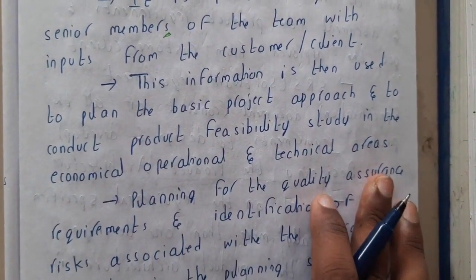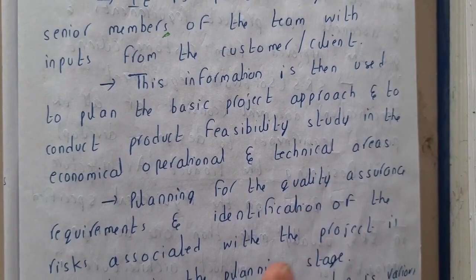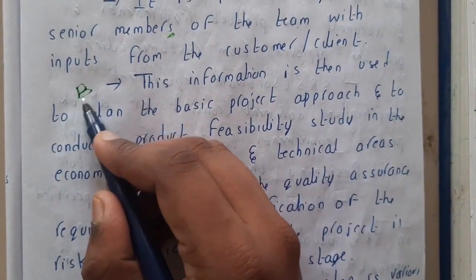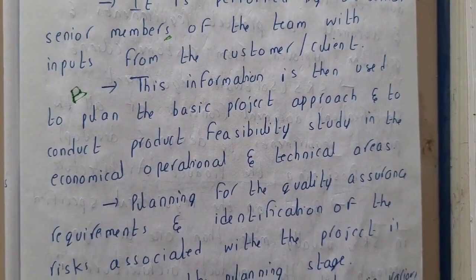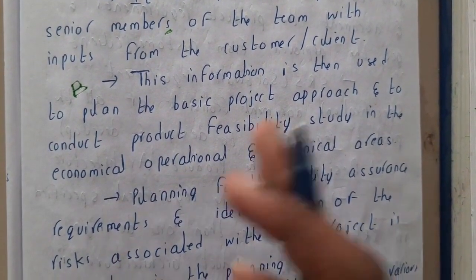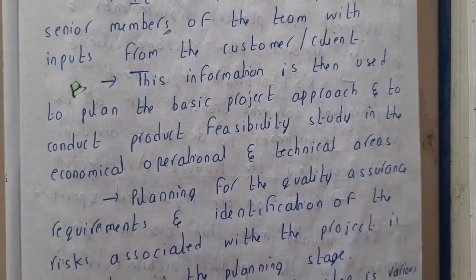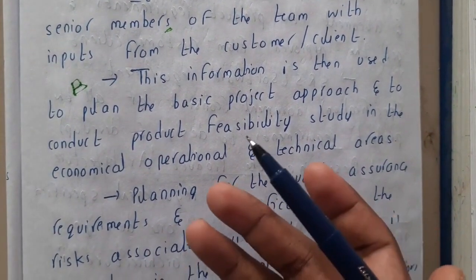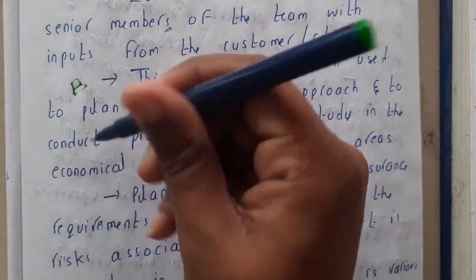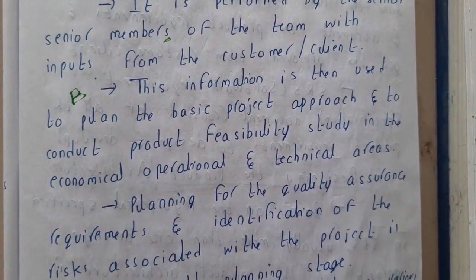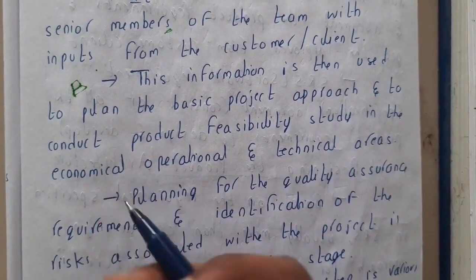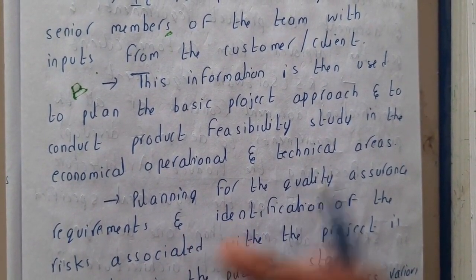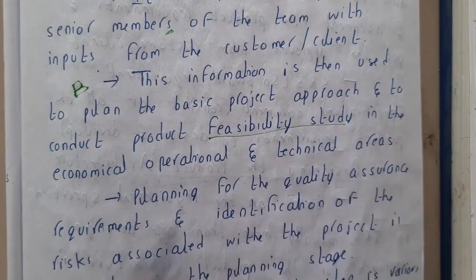This information is used to plan the basic project approach and conduct feasibility studies in economical, operational, and technical areas. For example, if someone asks you to send a rocket to Mars, you won't directly say it's possible — you'll first analyze whether it is feasible. Or if someone wants a pen with infinite ink, that idea is not feasible. That is the reason why you need to do feasibility tests first.